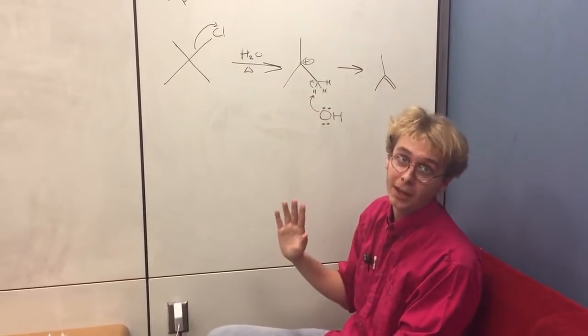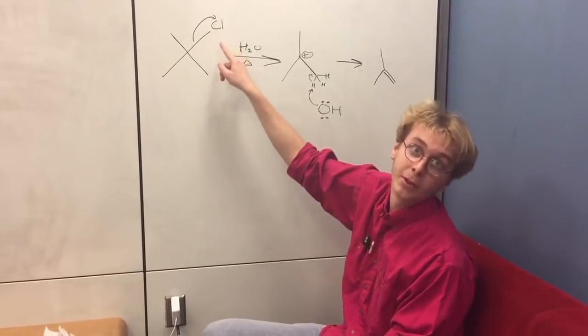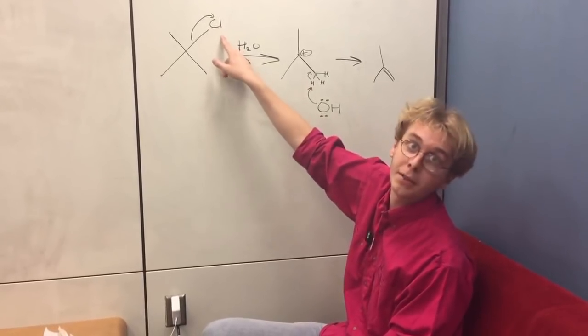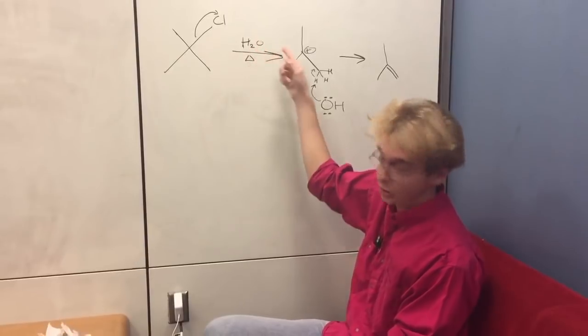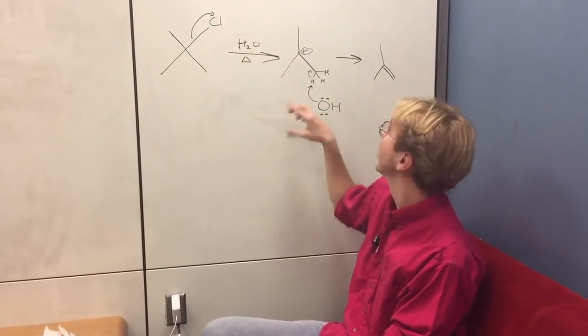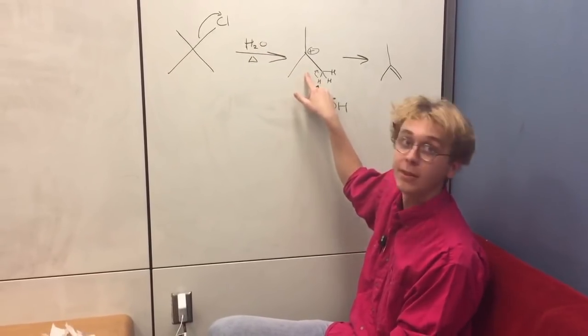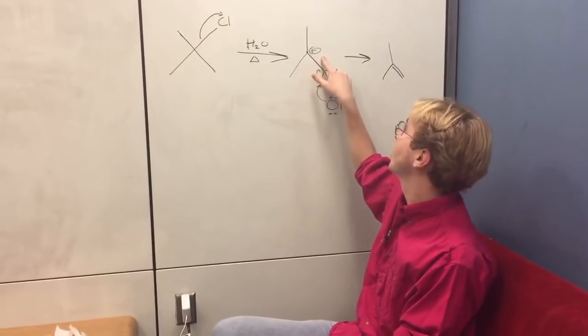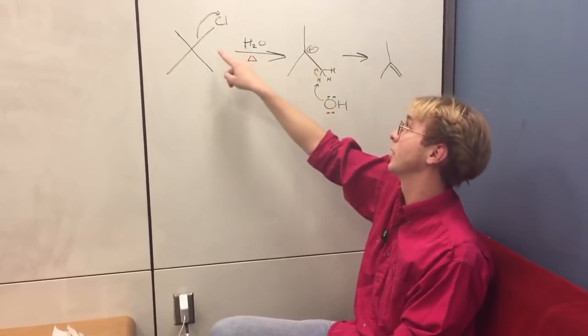But first, with an E1 mechanism, you're going to have the loss of a leaving group. And the chlorine is a very good leaving group, so it's going to go ahead and just leave, like I said. And that forms a carbocation. This carbocation is positively charged because it just lost the chlorine.